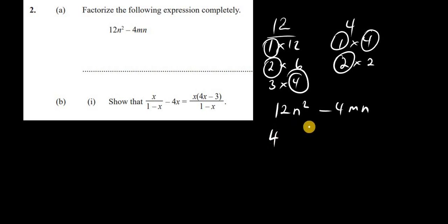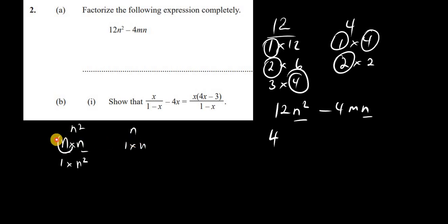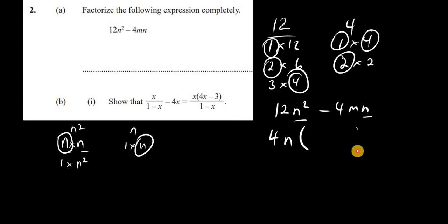For the expression 12n² minus 4mn, we take out the HCF 4 from the coefficients. We also compare the variables: we have n² and n. n² means n times n, while n can be treated as 1 times n. The common variable factor is n, since n is common to both terms. The highest common factor of the entire expression is 4n, which we factor out.